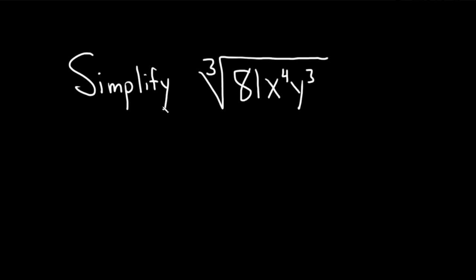Hi, in this video we're going to simplify this. So the first step is to factor everything completely. We're going to look at this 81 and factor it as a product of primes.